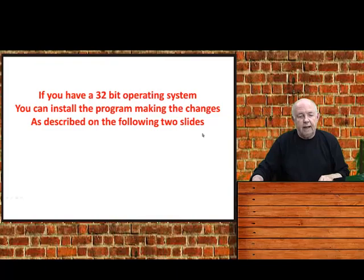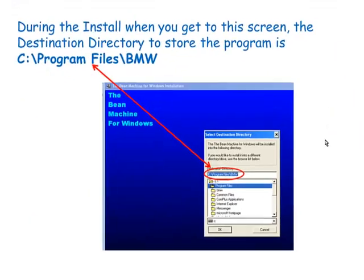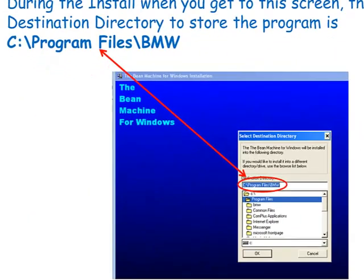If you have a 32-bit operating system, you can install the program — fairly simple. I've described on the next two slides how to do it. During the install process on the Bean Machine, you'll get a screen that looks like this, and on there you'll see where it's trying to install it — the destination directory is C:\Program Files\BMW, and it's the program files directory that's giving you the problem.